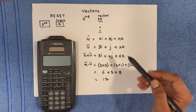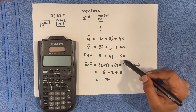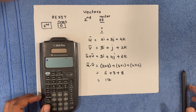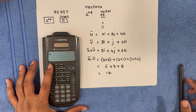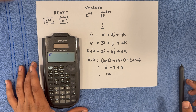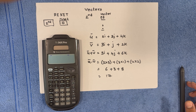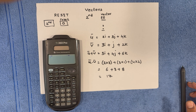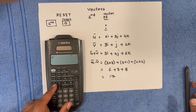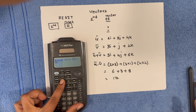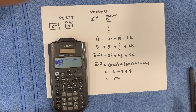Now let's solve this particular problem using the calculator. First, turn on the calculator and use the second button — its function is similar to the shift key on a keyboard. After hitting the second button, find the vector option, which is on top of the EE key, so hit EE where vectors are highlighted.